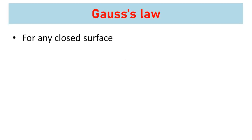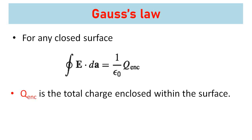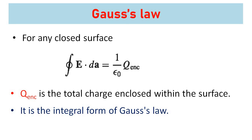Gauss's law states that for any closed surface, the closed surface integral of E dot dA equals 1 over epsilon-zero times q-enclosed, where q-enclosed is the total charge enclosed within the surface. In other words, the closed surface integral of E dot dA is proportional to the charge enclosed within the surface. This is the integral form of Gauss's law.